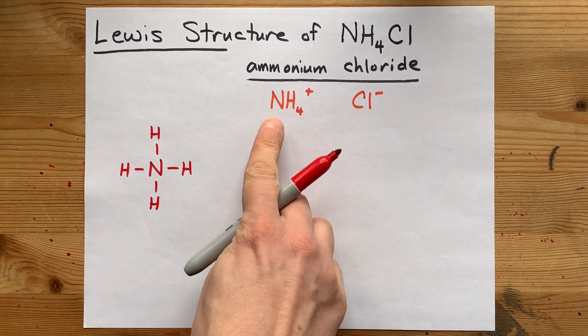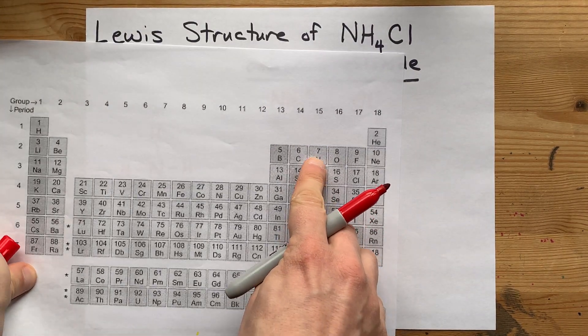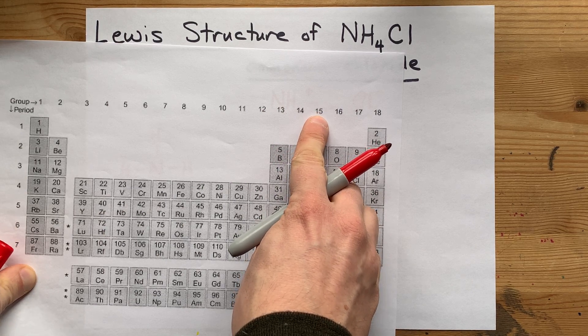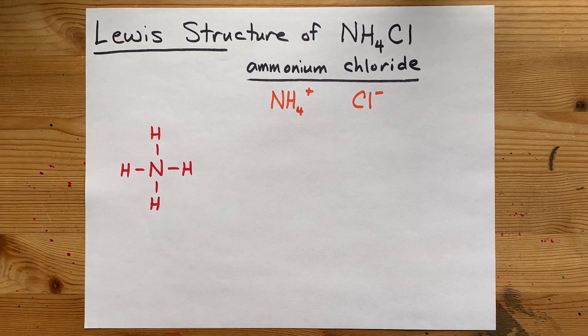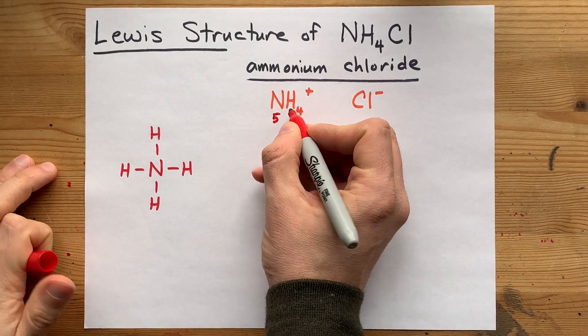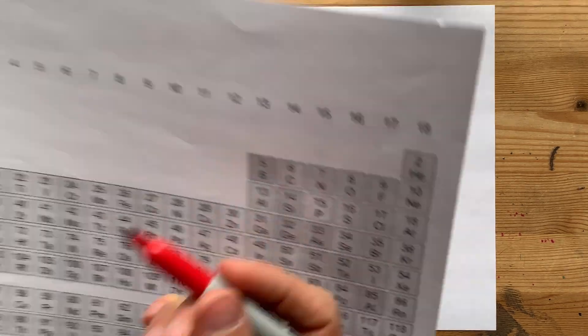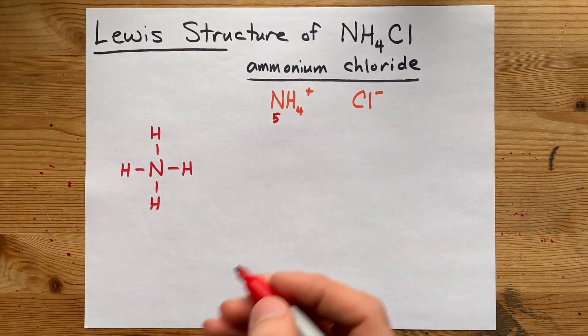Now, nitrogen brings five valence electrons in its outer shell. I know that because it's in group 15. See the five there? That's how it tells me how many electrons nitrogen brought with it. And each hydrogen brings one valence electron with it. It's in group one.